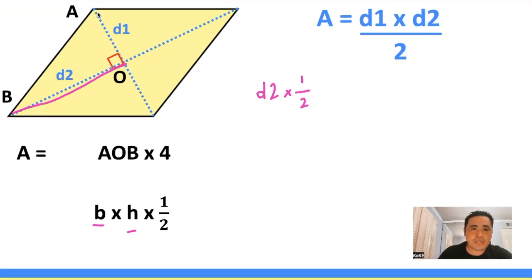Same thing for the diagonal 1 here. Instead of the entire diagonal, we just want the top portion. So we can think of that as diagonal 1 times a half.